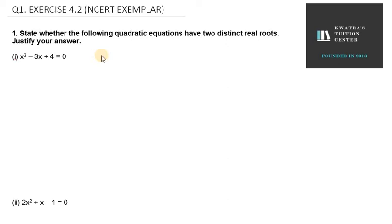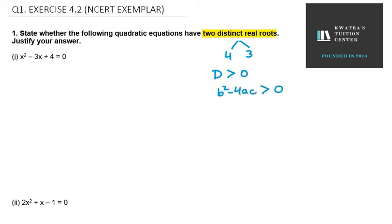Hello everyone. Let's start with question number 1 of exercise 4.2. It says: state whether the following quadratic equations have two distinct real roots. Two distinct real roots means two values that are different. This condition holds when the discriminant D is greater than 0, where D equals b squared minus 4ac. If this condition is satisfied, then we can say the equation has two distinct real roots.